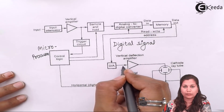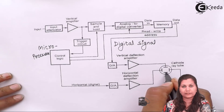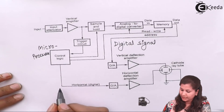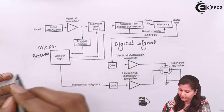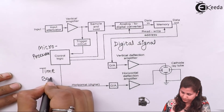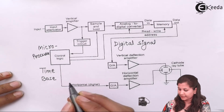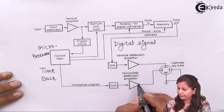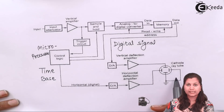The digital signal is converted into analog, then amplified and given to the vertical deflection plates of the CRT. Similarly, the control logic microprocessor produces a digital output — the time-base signal — which is a digital ramp signal. It is converted into analog form, amplified, and given to the horizontal plates of the CRT. This is how all the blocks and their functions work in the block diagram.